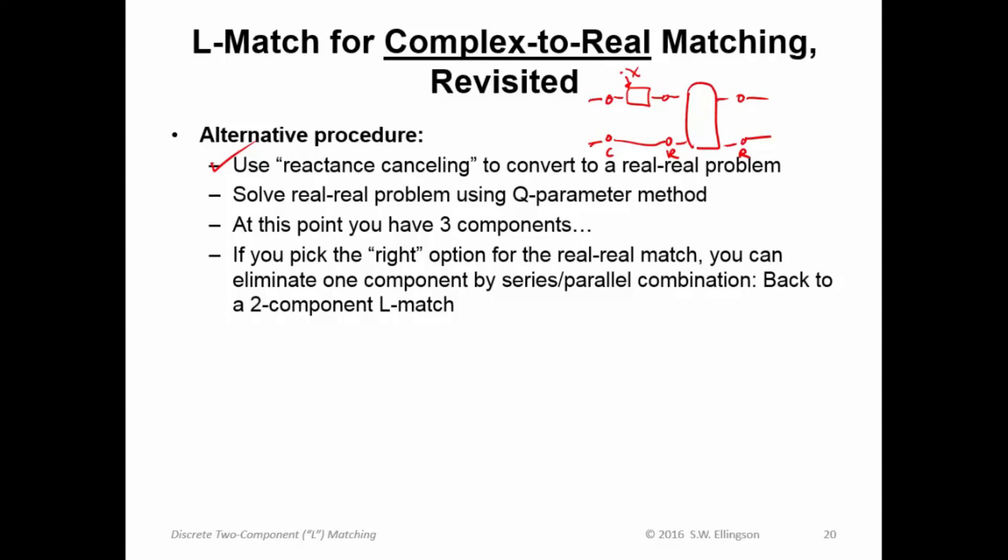So if you do this, you're going to have three components. You have one component here and then two more reactances in this box. Typically, if you choose the right option, you can collapse this back to two components. Right? So, for example, if you have an inductor here and a capacitor here, and let's say this is an inductor, you could just add up the values of these two inductances and be back to a two-component circuit. Right? Not always possible, but that's one way to go about this.